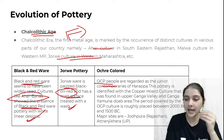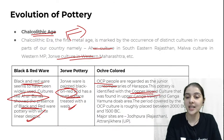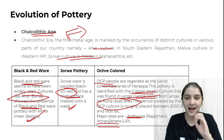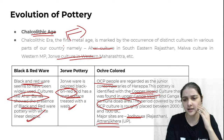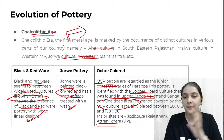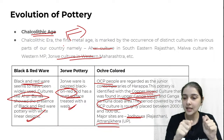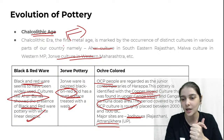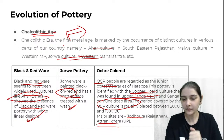Coming to ochre color — what we call gerua rang — a reddish-orange color. In this ochre colored pottery, we find copper hoard culture sites in the Ganga Valley, upper Gangetic Valley, Ganga-Yamuna Doab, Jodhpur, Atranjikhera, and many sites. Vishal — iron has not come yet at this stage. We are only talking about copper — iron has not been discovered yet in the Chalcolithic age. Iron only comes in a later period.